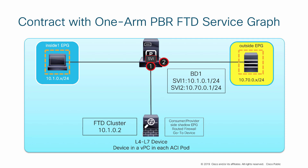In this particular design, we have only one bridge domain that has multiple SVIs, and those two are residing in these EPGs. We have an FTD cluster that has multiple devices attached to that service graph, one in each pod. We can use a single subject with full inspection, sending all traffic to the firewall, or you also have an option to have multiple subjects where you can direct low-risk, high-volume traffic line rate through the fabric between these same workloads.